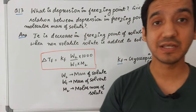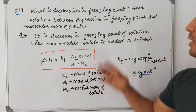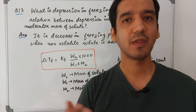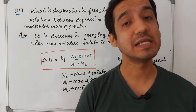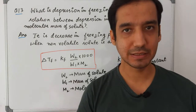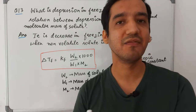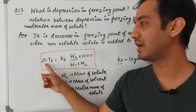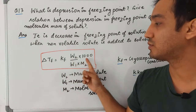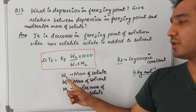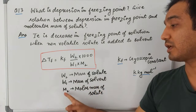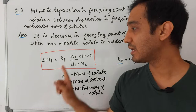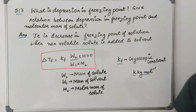Question 13: What is depression in freezing point? Depression in freezing point is the decrease in freezing point of a solution when a non-volatile solute is added to the solvent. For example, water's freezing point is 0°C, but it decreases upon adding a non-volatile solute. It is denoted ΔT_f, and the formula is: ΔT_f = K_f × (w₂ × 1000) / (w₁ × M₂). K_f is the cryoscopic constant with units K·kg/mol.